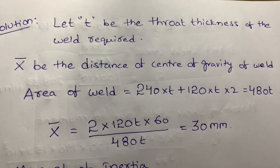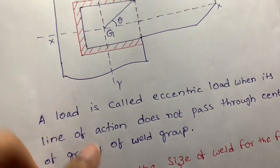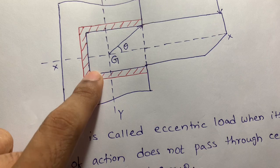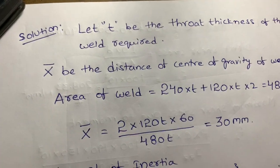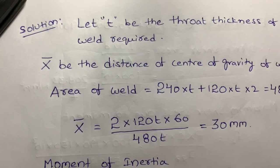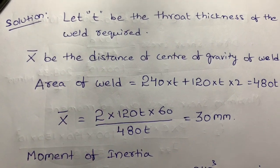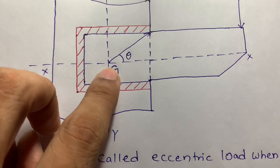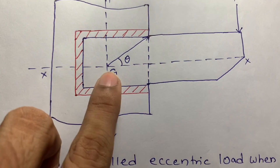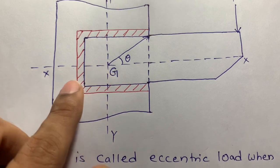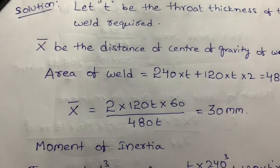Let T be the throat thickness of the weld required — that is the thickness of this weld. Next, X-bar is the distance of the center of gravity of the weld. Center of gravity of the weld means from the vertical weld to this distance. This is the X-axis and this is the Y-axis. X-bar is the center of gravity of this portion and the distance from here to here.